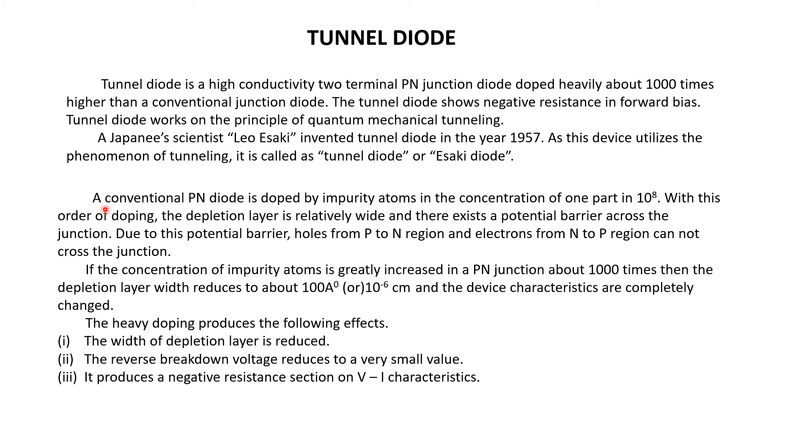In a conventional PN diode, it is doped by impurity atoms in the concentration of 1 in 10^8, which means for 10^8 semiconductor atoms one impurity atom is added. With this doping, the depletion layer is relatively wide and there exists a potential barrier across the junction.